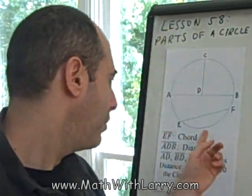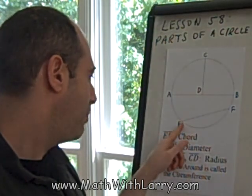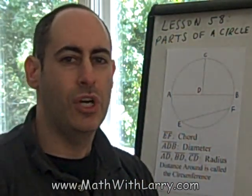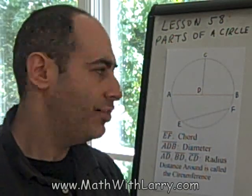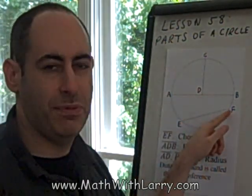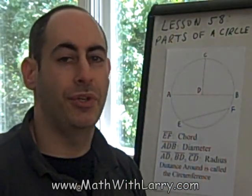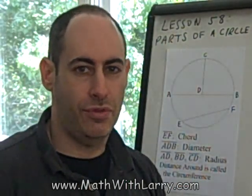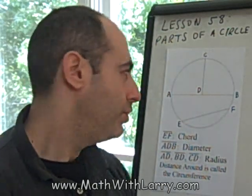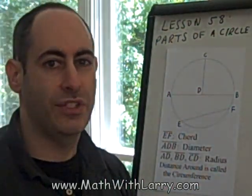Let's take a look at the diagram here. Take a look at the line segment that connects point E and point F. I use the word line segment because it has a specific beginning and a specific end. If you hear the word line in geometry, it refers to something that goes on and on forever infinitely in both directions. So in this case, EF is considered a line segment.